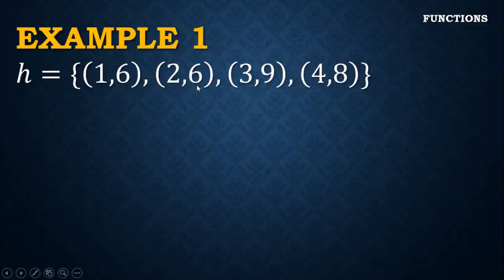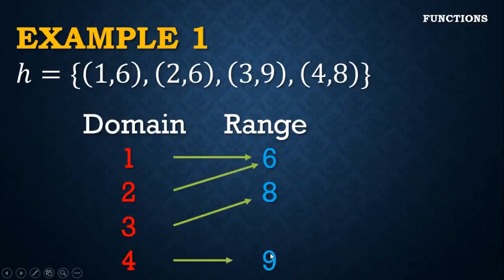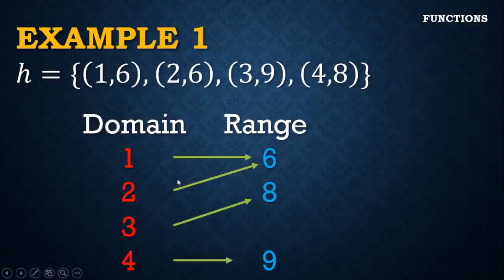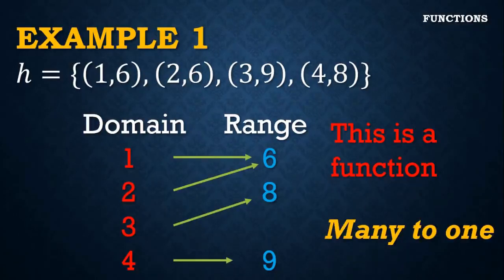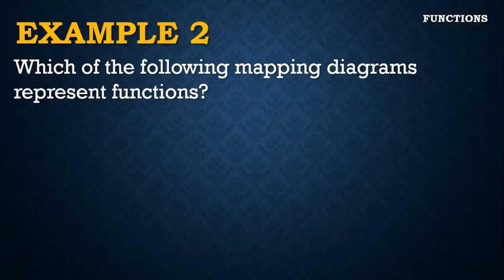The third example has ordered pairs (1,6), (2,6), (3,9), (4,8). The domain is 1, 2, 3, and 4, while the range is 6, 8, and 9. Two x-values — 1 and 2 — both correspond to the y-value 6. This is many x-values corresponding to one y-value, called many-to-one. Many-to-one is also a function. To summarize: one-to-one is a function, many-to-one is also a function, but one-to-many is not a function.